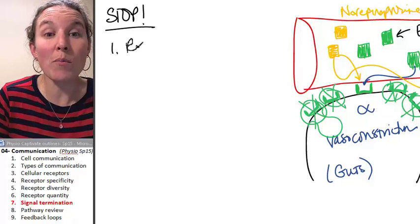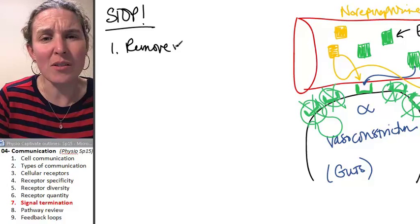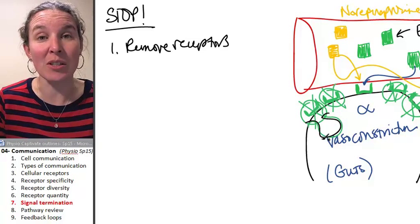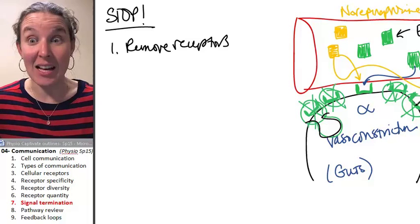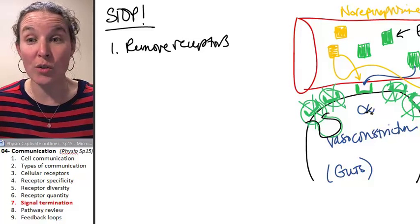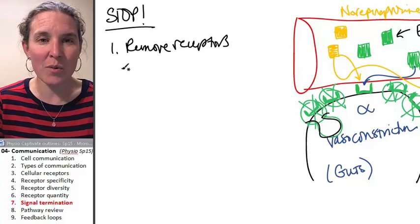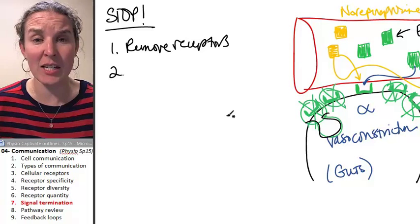Number one, remove receptors. That's easy. We're just going to endocytose a receptor and digest it. And that's what we were talking about. If we have an overdose of stimulus, we might just remove the receptors to stop that because it got crazy.